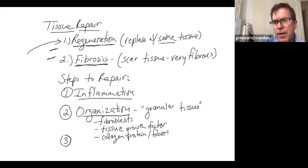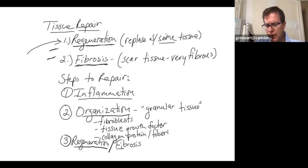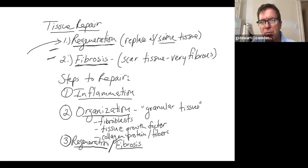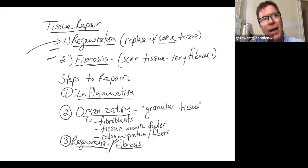Third is regeneration and fibrosis — replacing old tissue with new original tissue or, more commonly, a combination: some regenerated tissue and some fibrous scar tissue. The blood clot and granular tissue get pushed off in the form of a scab. Regenerated epithelium almost always has some fibrosis in it — rarely is it 100% regeneration.